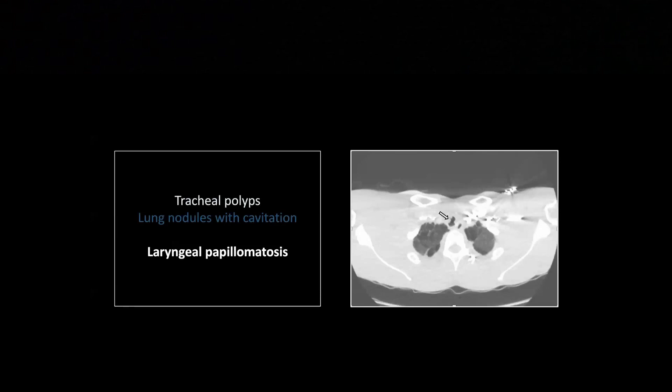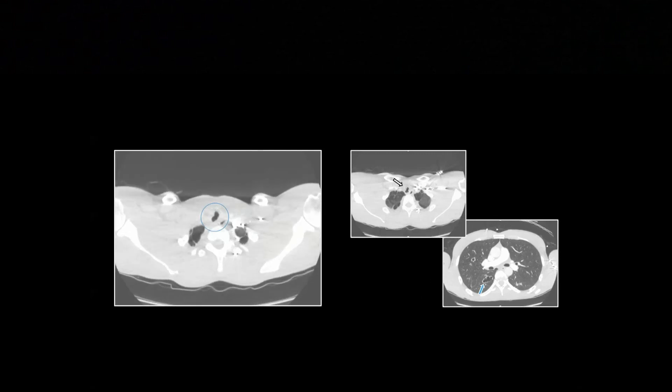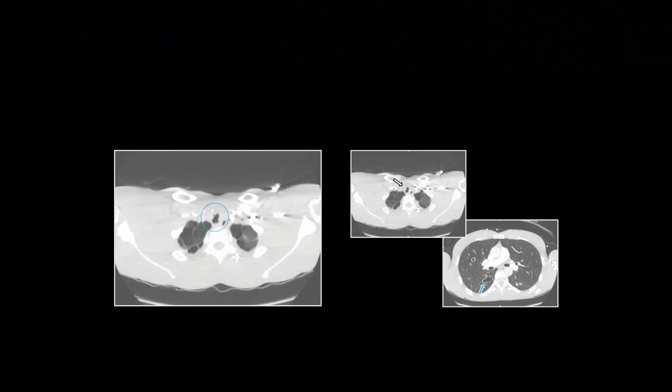You get these polyps in your trachea, and it's often associated with cystic changes in the lungs. They'll get nodules in the lungs to begin with, and then those nodules will shell out and create a very thin-walled cyst. So a very thin-walled cyst always makes me think of laryngeal papillomatosis.